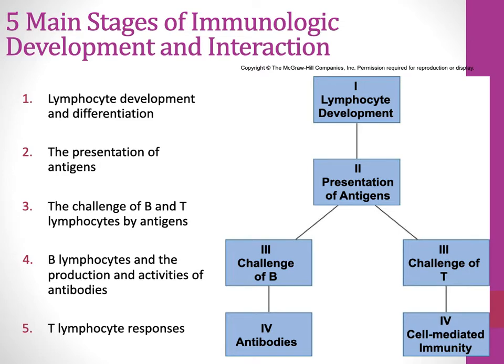It's actually a negative selection — you don't want T cells and B cells to respond to self, because you don't want them to recognize self. Then in the third stage, we have a challenge with actual foreign antigen. This is where antigen-presenting cells present antigen from foreign material or from dead, dying, damaged, or altered cells. The T cell or B cell would then respond if it can recognize it.